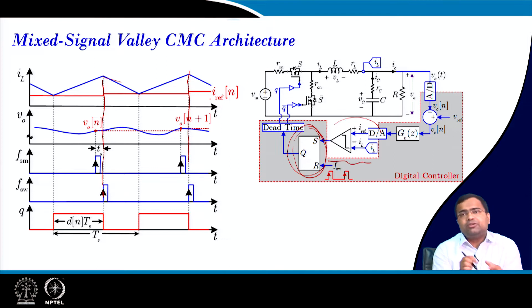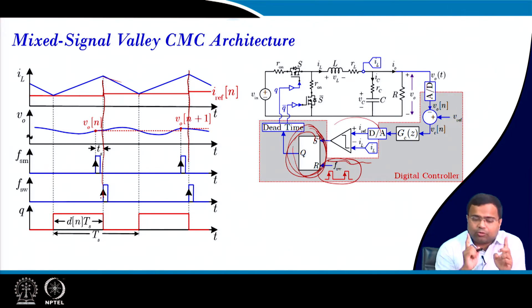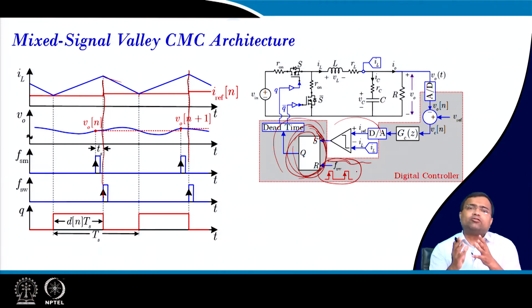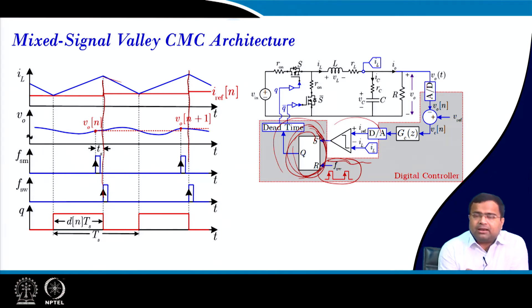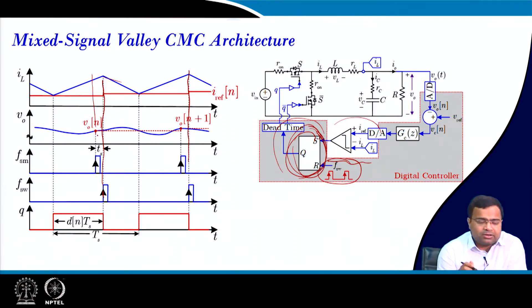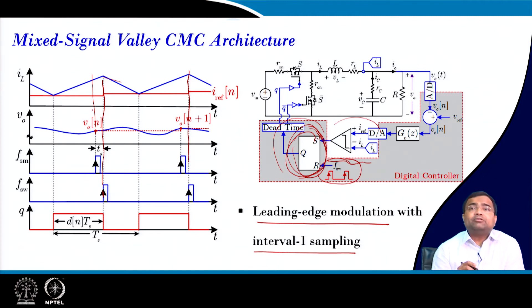The reference current can be used as a valley or a peak — you only have to change the algorithm as well as the modulation mechanism. Whenever the switching clock comes the switch will be turned off, and when it hits the lower limit the switch will again turn on. This latch circuit and clocking can easily be reconfigured in digital control, so you can use the same mixed signal architecture for peak as well as valley. Here again you have to take the sample a little earlier than the actual switching clock, to provide time for ADC conversion and computational time. Since the sample is captured during the on-time, this is known as leading edge modulation and it is called interval-1 sampling.